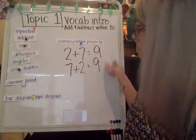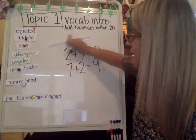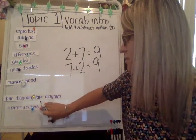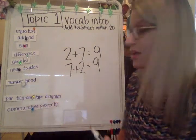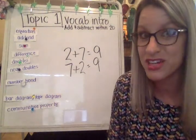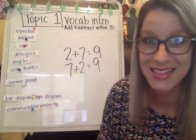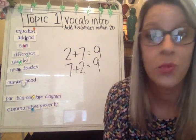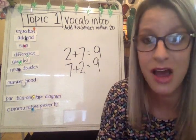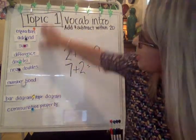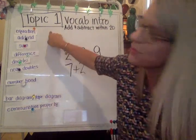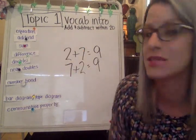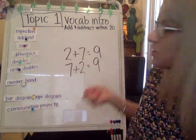The commutative property is something you won't formally learn until you're older, but I like you to learn a little something extra and remember it now. If you can, that's awesome. If not, we will continue to talk about the commutative property and all of these terms during Topic 1 as we work on addition and subtraction within 20.